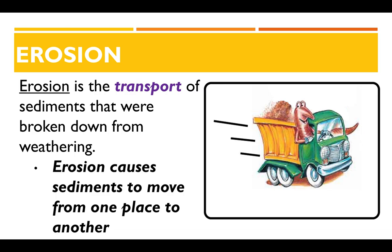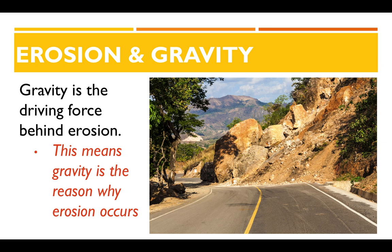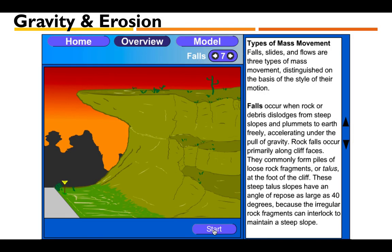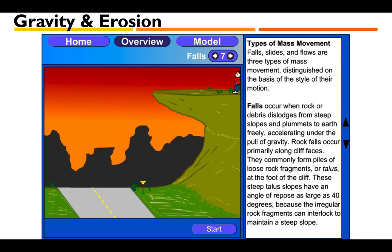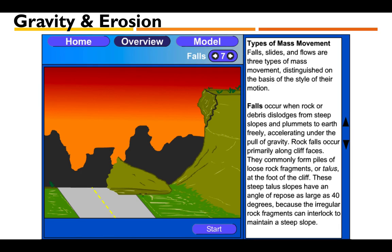The driving force behind erosion is gravity. A great example is the image showing a landslide — gravity pulls rocks and dirt down the hill slope to the road. Here's a little example showing what gravity and erosion could look like: the rock got broken down due to weathering and erosion transported it from the top of the cliff down to the road. Gravity took over and the sediments were moved from one place to another.